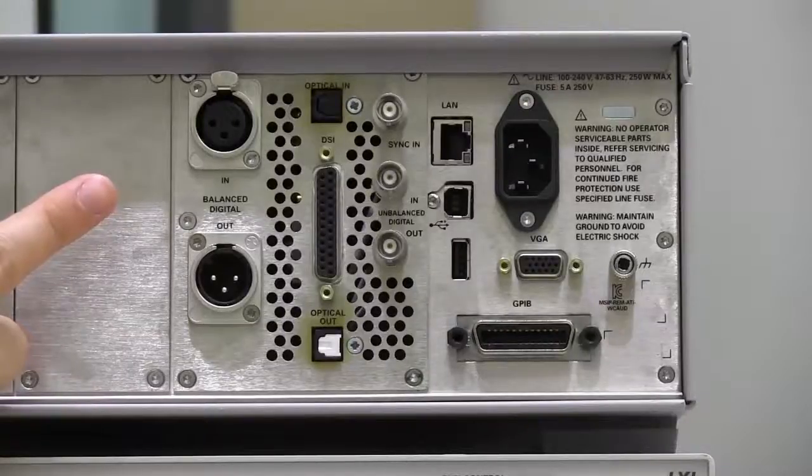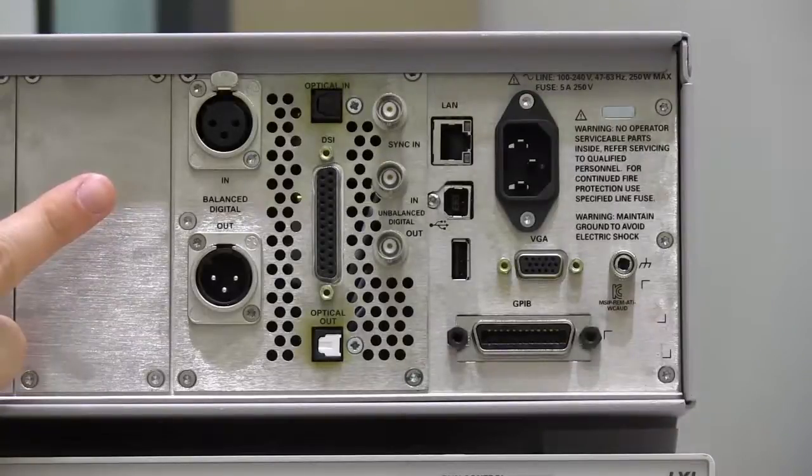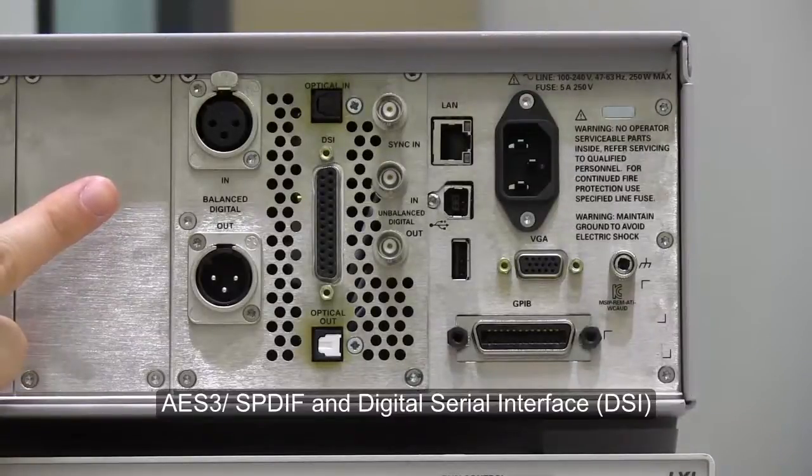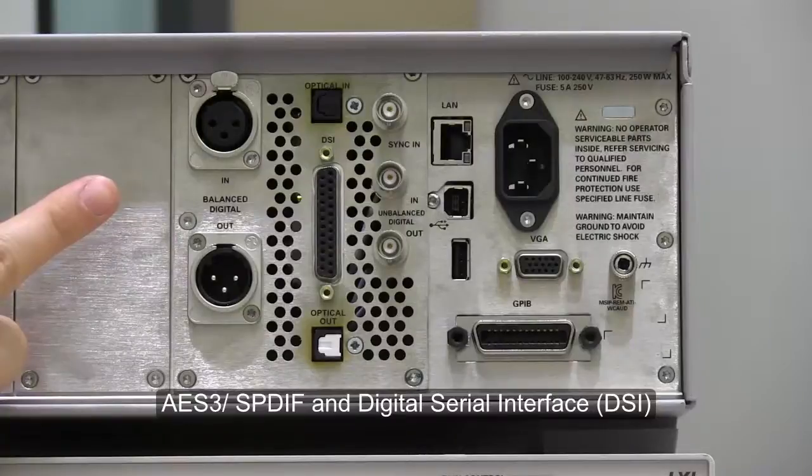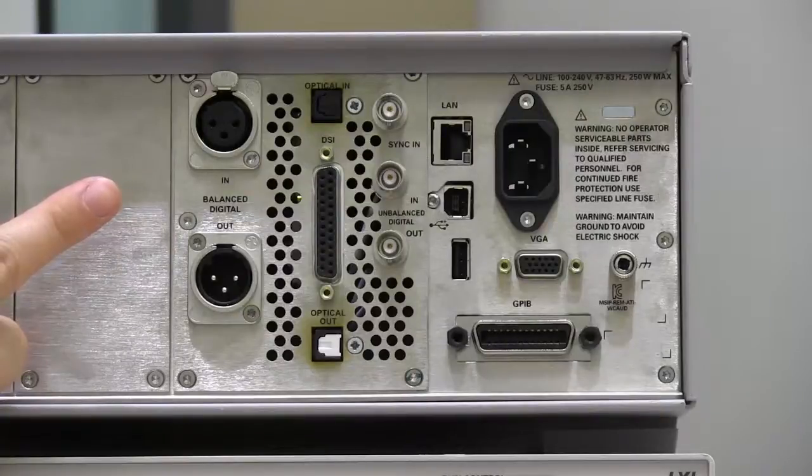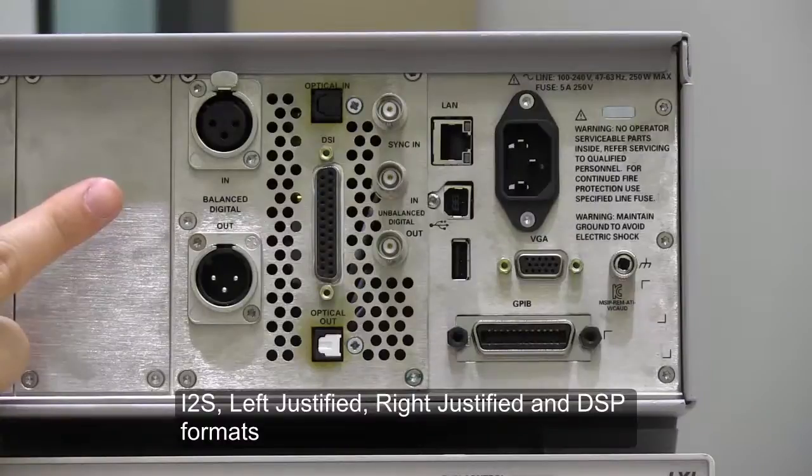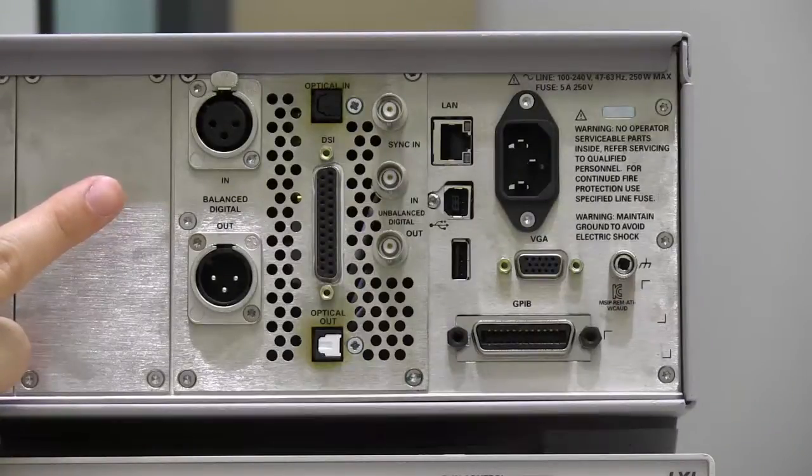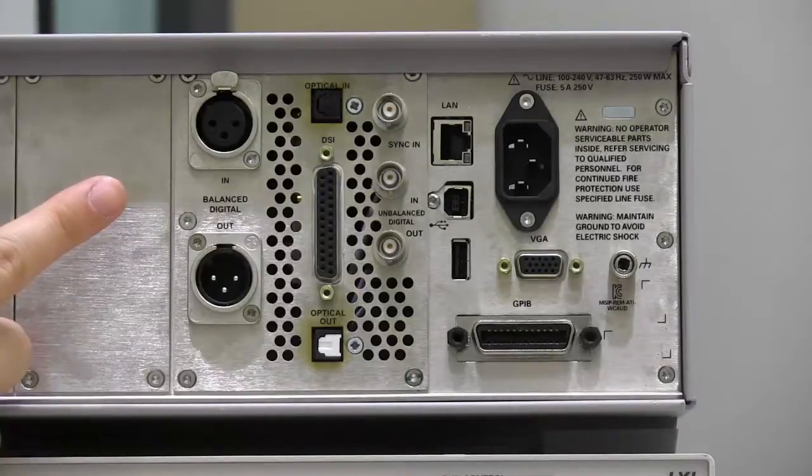The U8903B comes with an industrial standard interface, AES or SPDIF and Digital Serial Interface DSi. The U8903B also supports multiple DSi formats such as I2S, Left Justified, Right Justified and DSP. These formats are suitable for most digital audio design and verification applications.